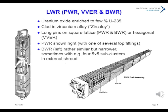Light water reactor PWR elements are wider than BWR. A 17×17 array is common, while BWR types may be divided internally into four 5×5 sub-arrays, with the whole encased in a shroud. All have channels for insertion of control rods or blades.